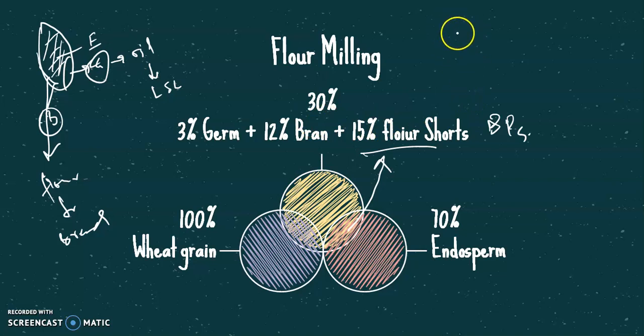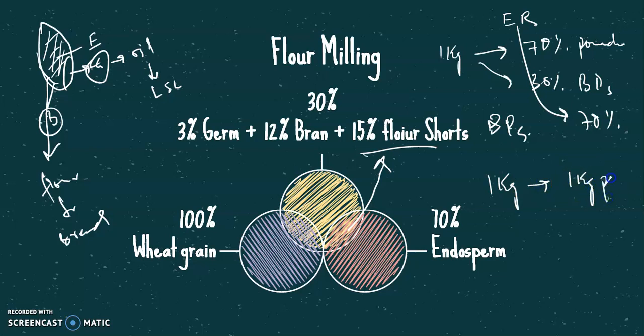We have an important term: extraction rate. What is it? Suppose if we have 1 kg grains and if we are converting this 1 kg grain into 70% powder, which means 70% endosperm and 30% byproducts, the extraction rate will be 70%. In another case, if we have 1 kg of grain and we are converting this 1 kg of grain into 1 kg powder and not removing the byproducts, the extraction rate will be 100%.